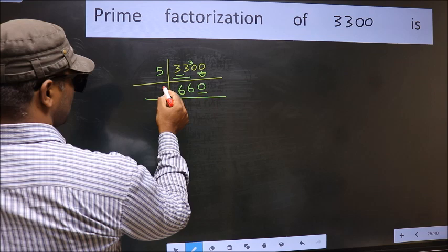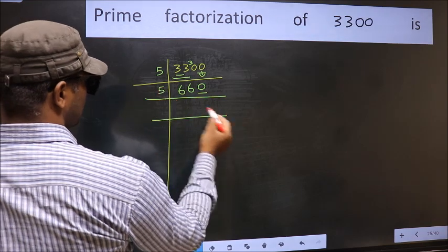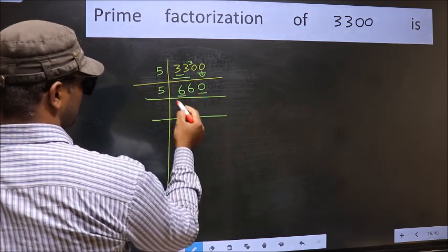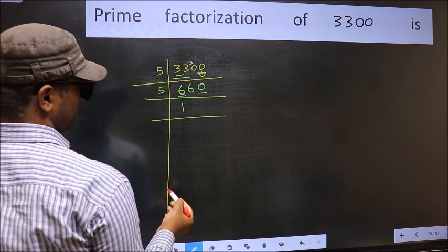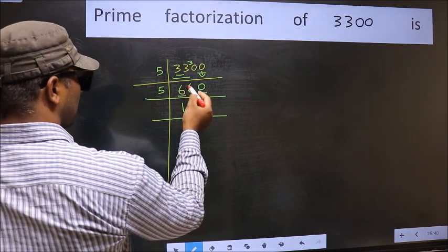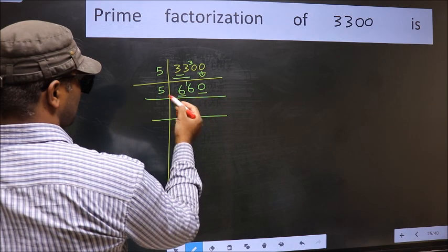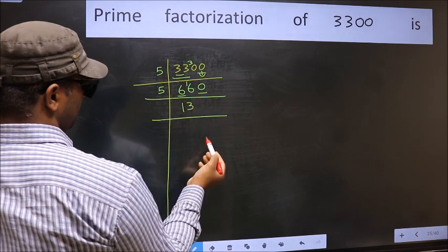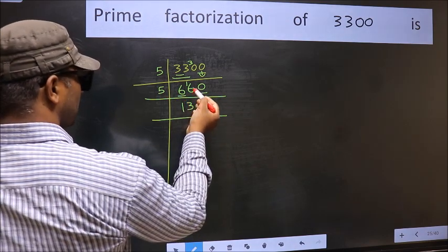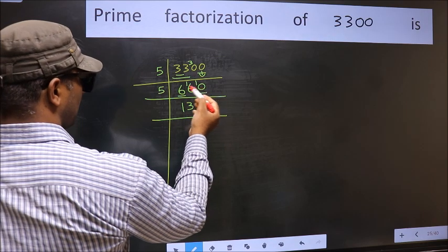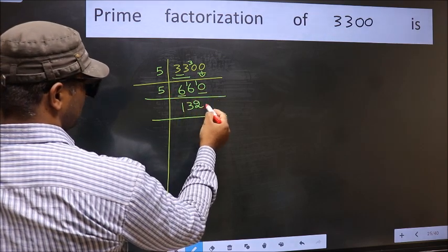Now last digit 0, so take 5. First number 6, a number close to 6 in 5 table is 5 times 1, 5. 6 minus 5, 1. 1 carried forward 16. A number close to 16 in 5 table is 5 times 3, 15. 16 minus 15, 1. 1 carried forward 10. When do we get 10 in 5 table? 5 times 2 is 10.